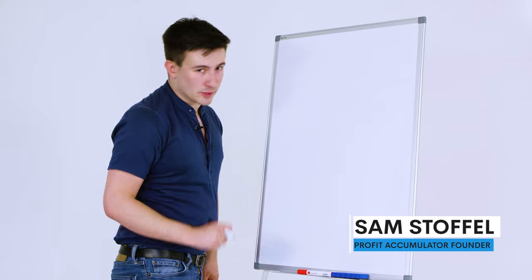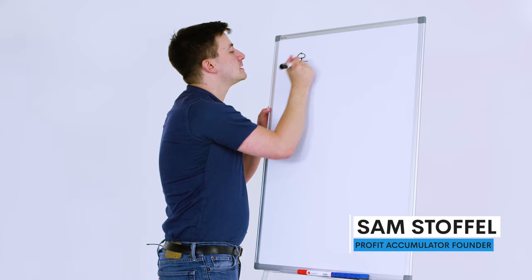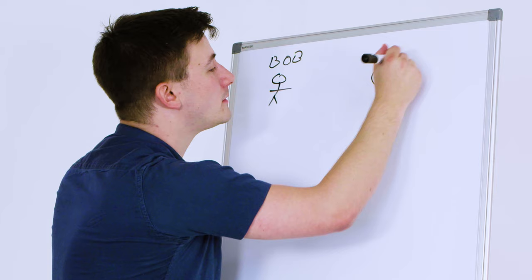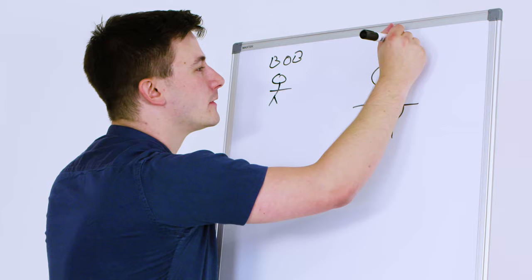This is how matched betting works. This is Bob, the punter. And this is Dom, the big nasty bookie.